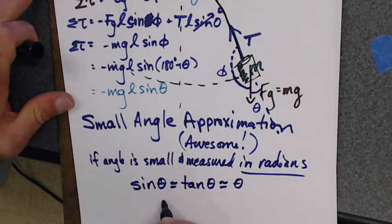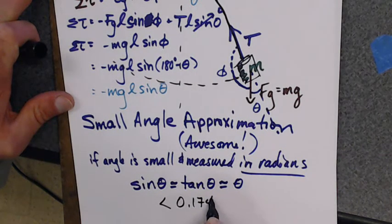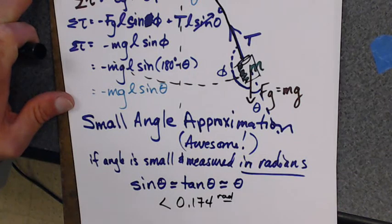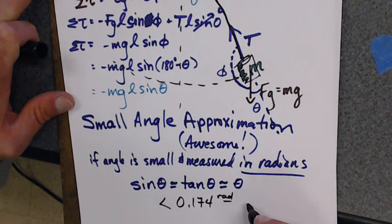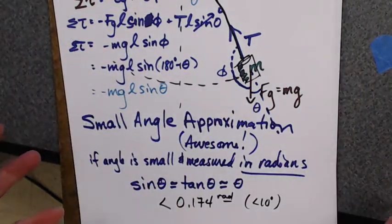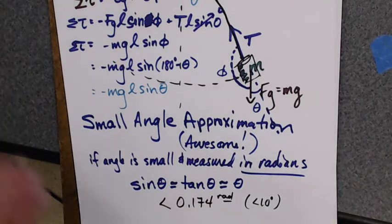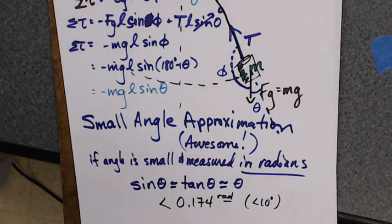How small does this have to be? It's only when you have to be below 0.174 radians. If you convert that to degrees, it's less than 10 degrees. Feel it, it's awesomeness. Small angle approximation. Be careful, it's very dangerous.